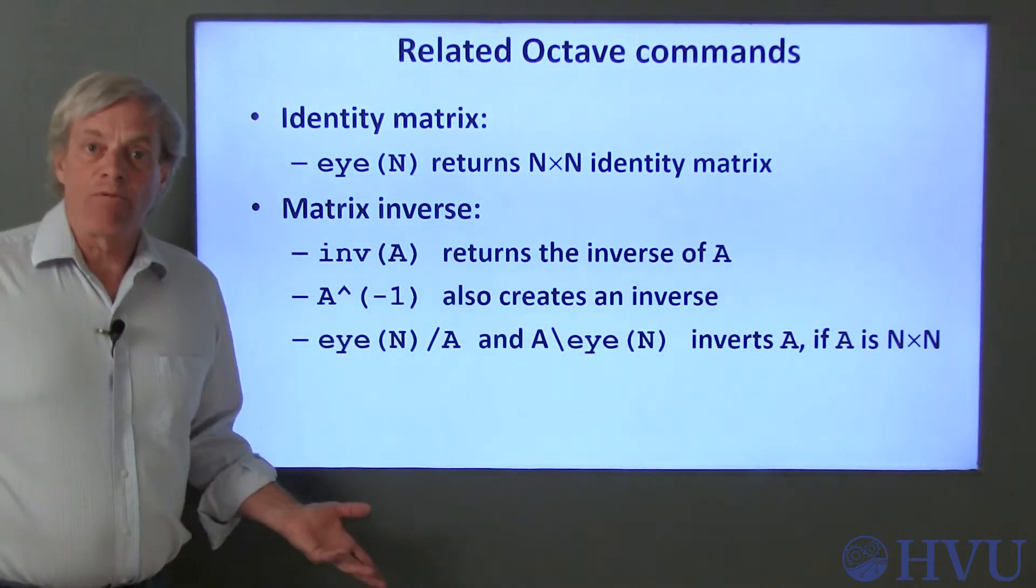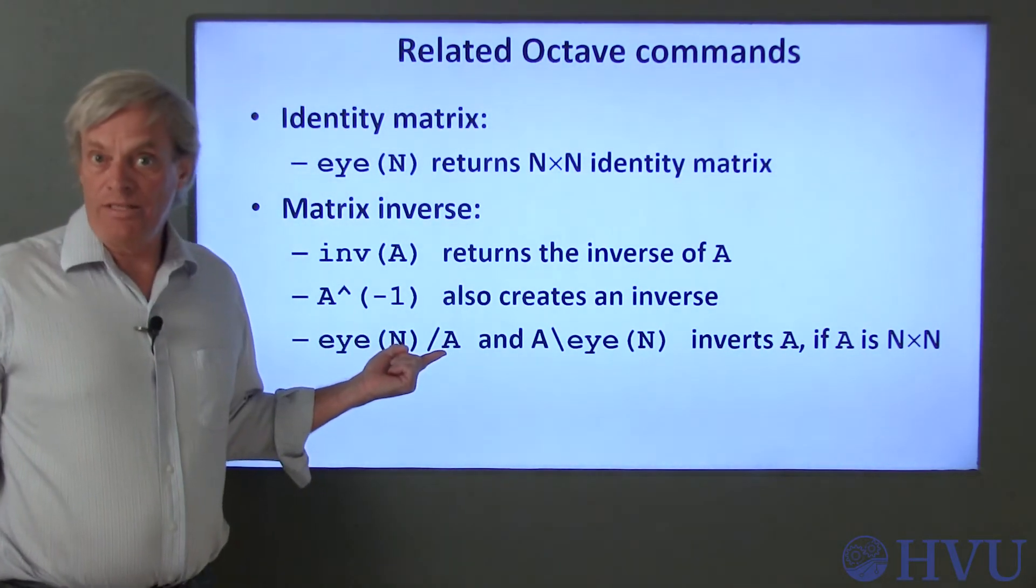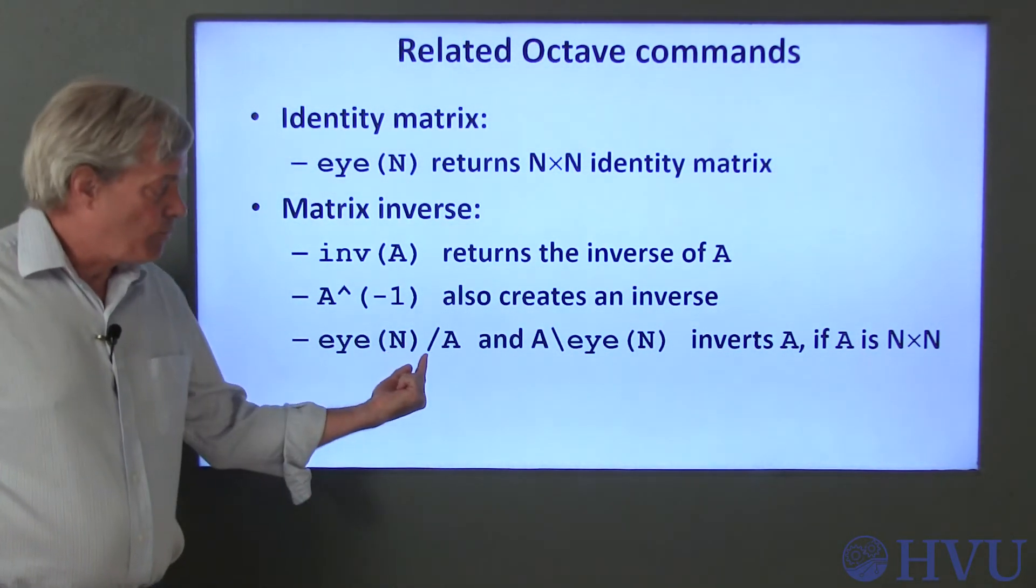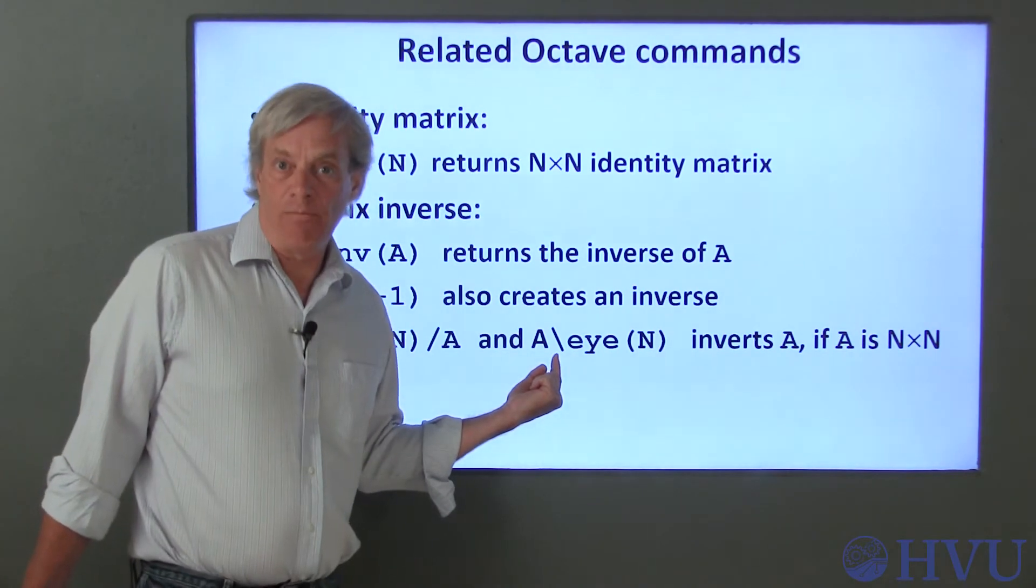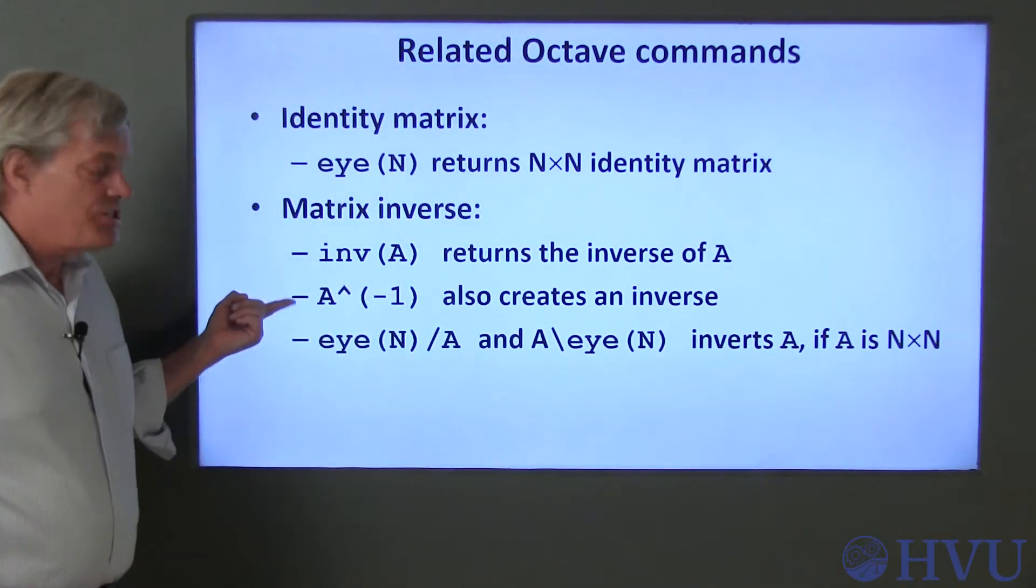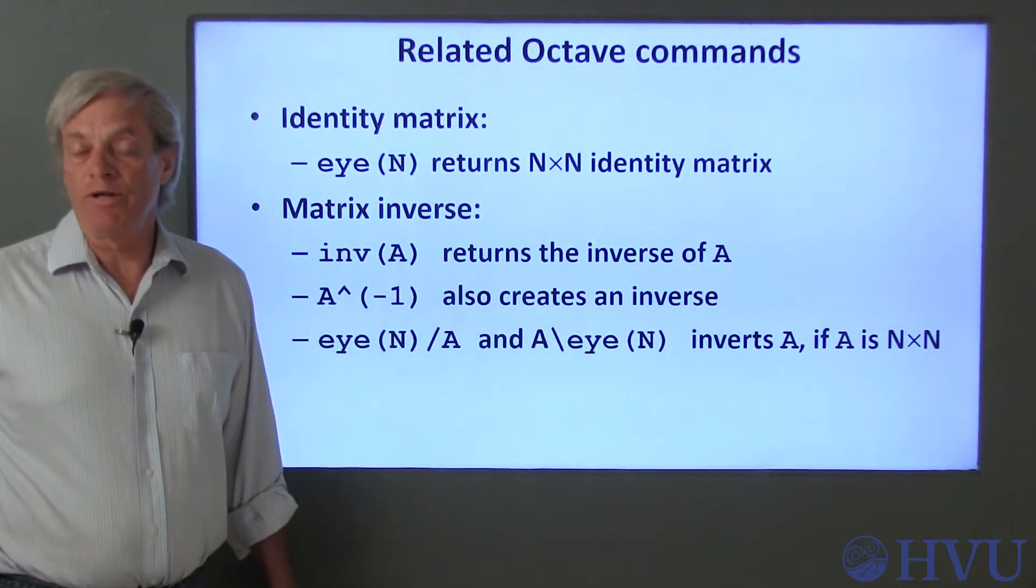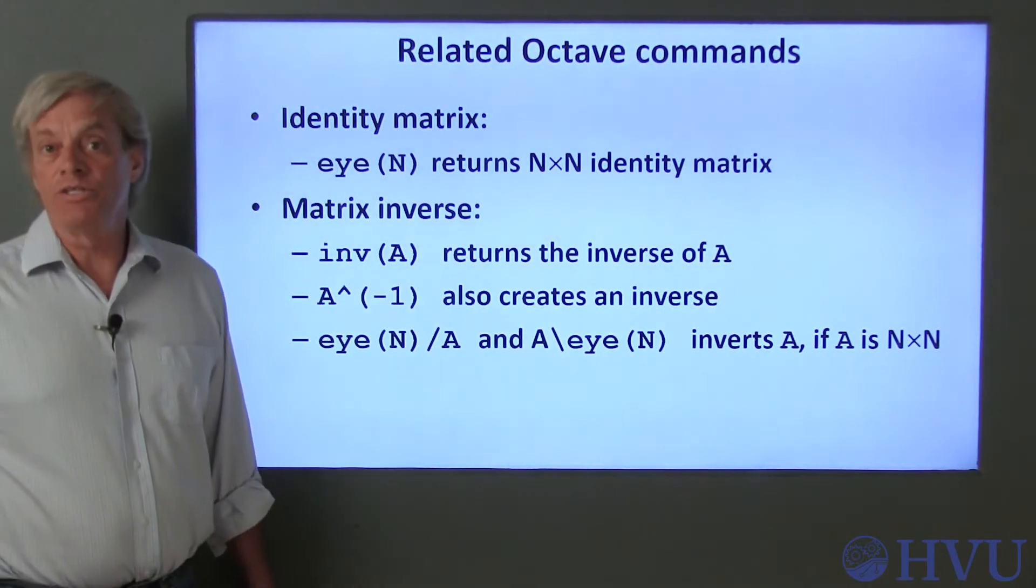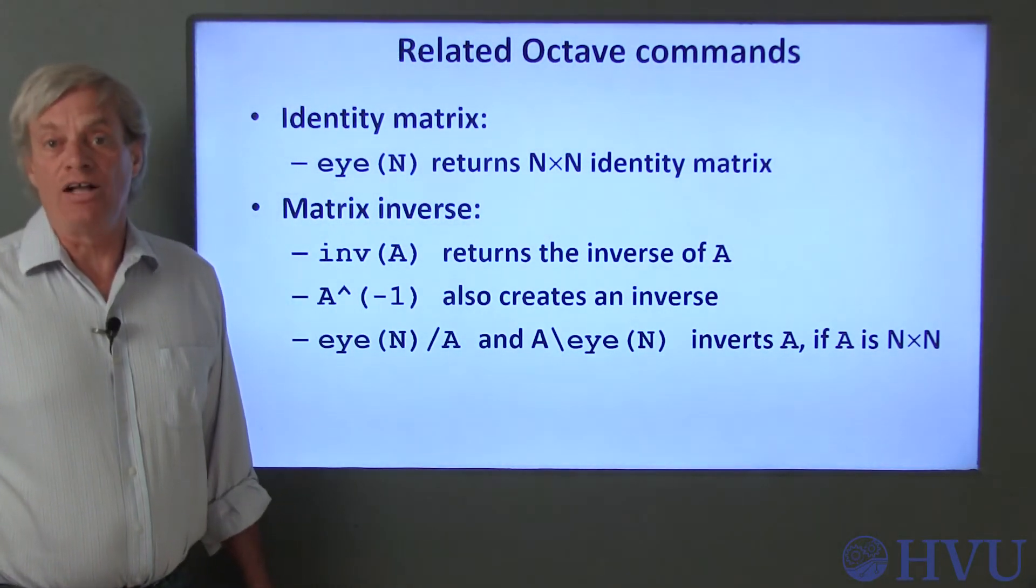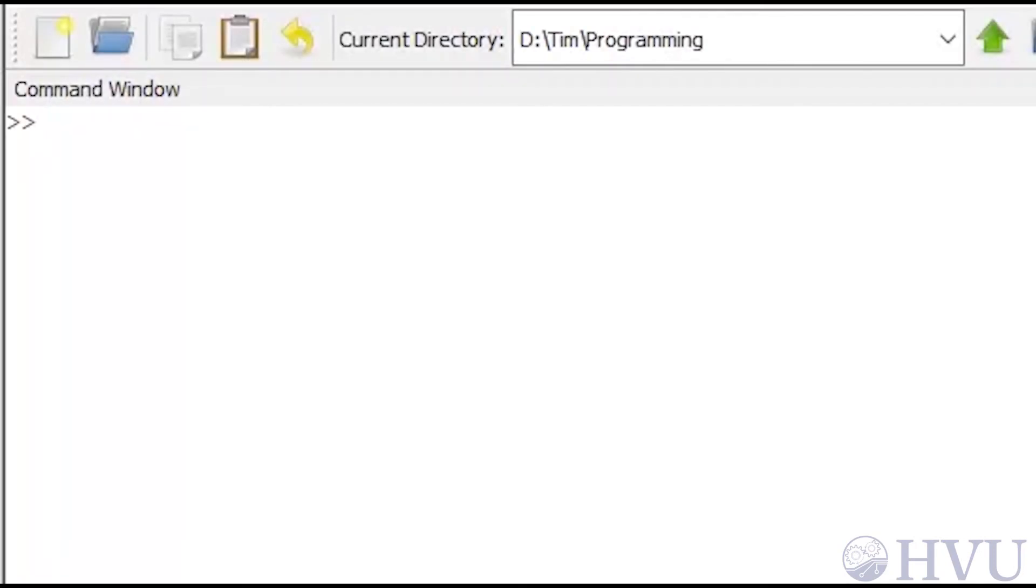You can also create an inverse by raising the matrix to the negative one power. Using the matrix division operator to divide the identity matrix by A also creates an inverse. You can use either the forward slash or the backslash operators for this. Notice that when using exponentiation or division, we are using the undotted version of those operators. Undotted operators perform matrix operations according to the rules of linear algebra.